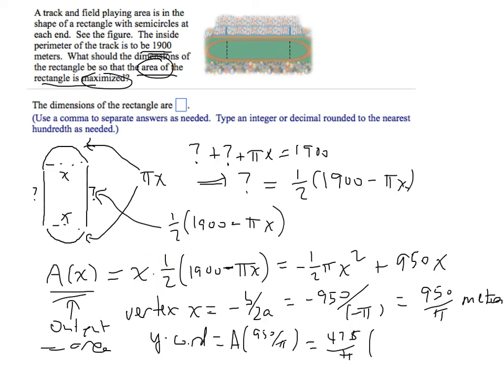The 1900 minus pi x: pi times x is pi times 950 over pi, so the pi's cancel out there and you have 1900 minus 950, which is just 950. So the y-coordinate of the parabola is 475 times 950 divided by pi.